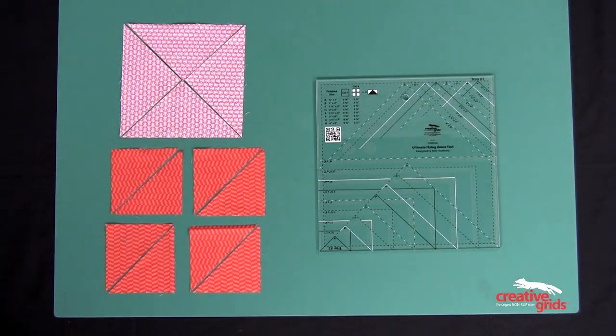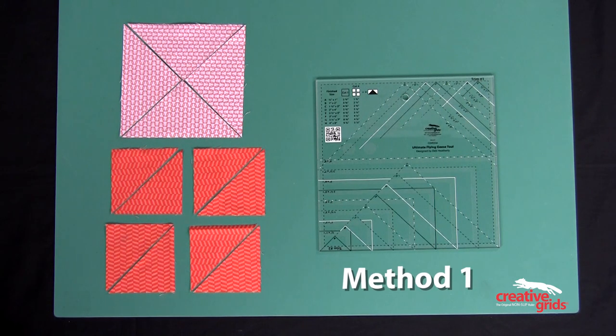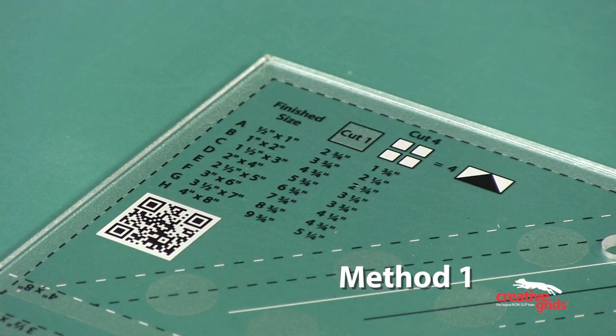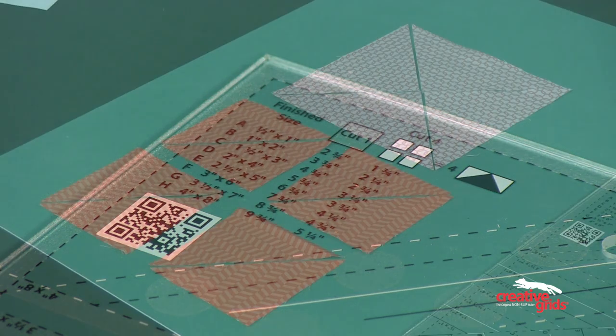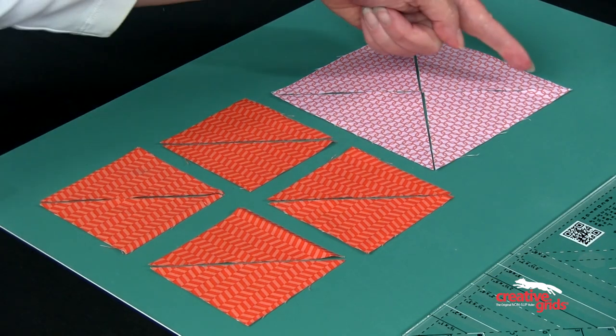Let's take a look at the first method for making four at a time fast-flying geese. Select the appropriate flying geese unit and follow the cutting chart printed on the ruler. Cut the large square twice on the diagonal.